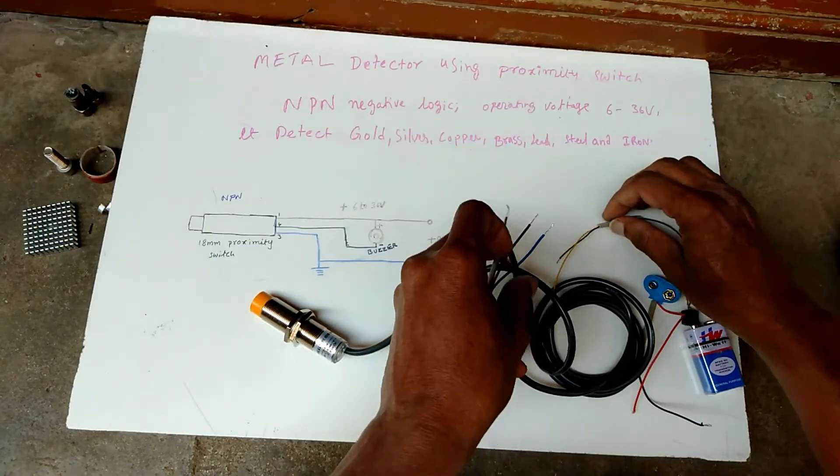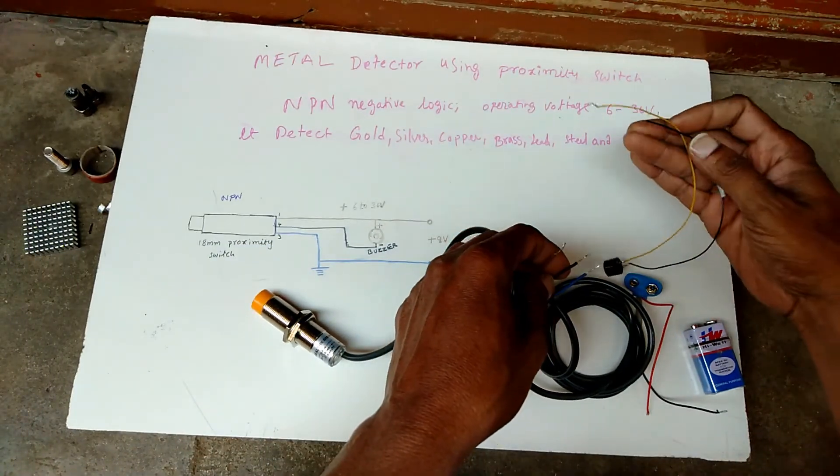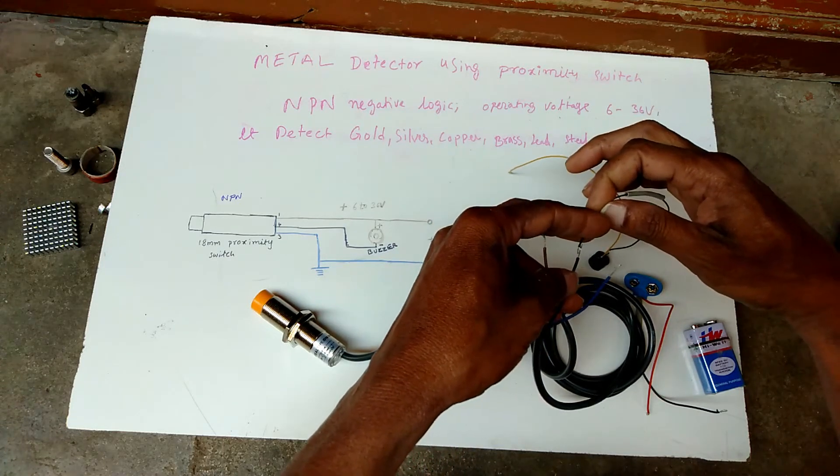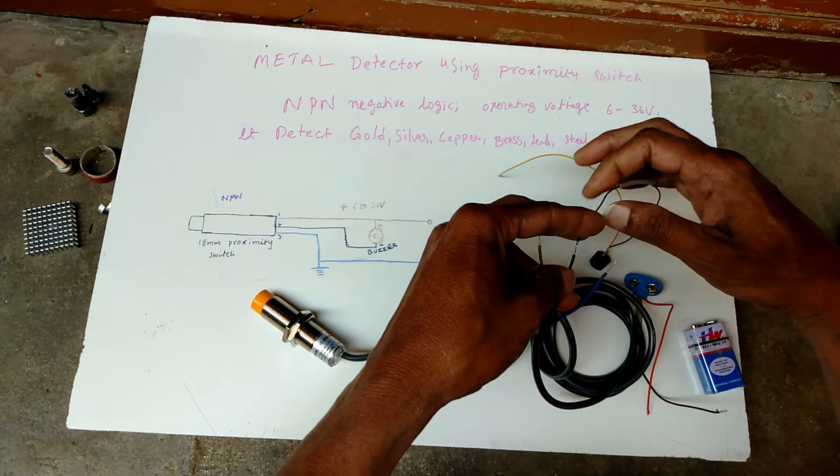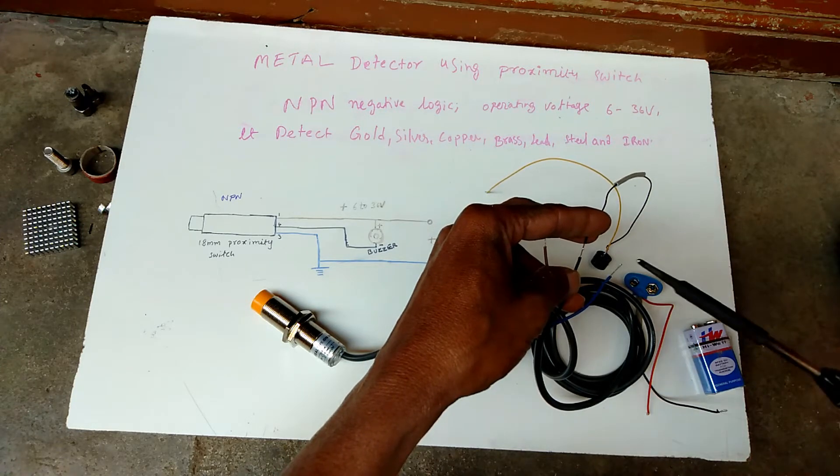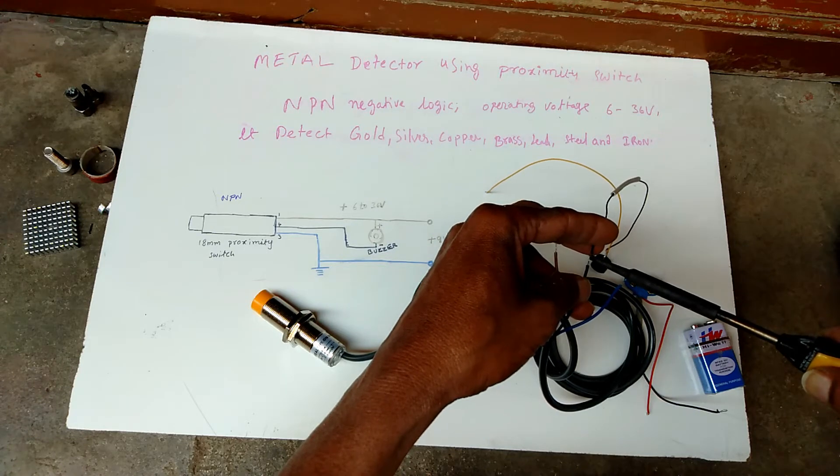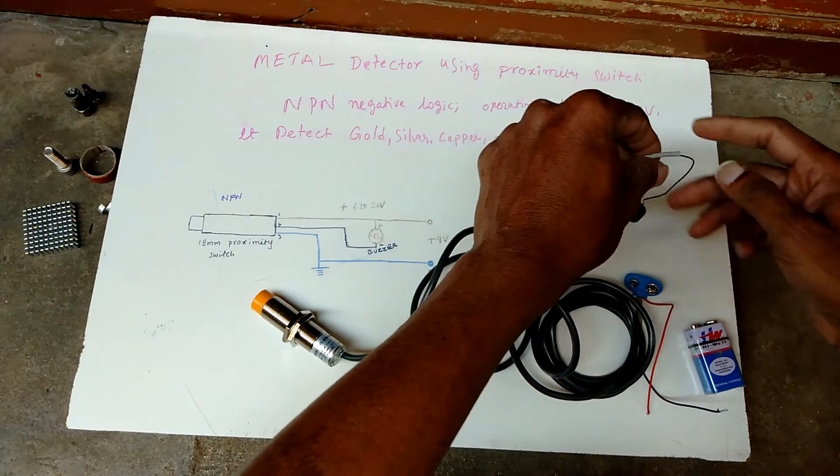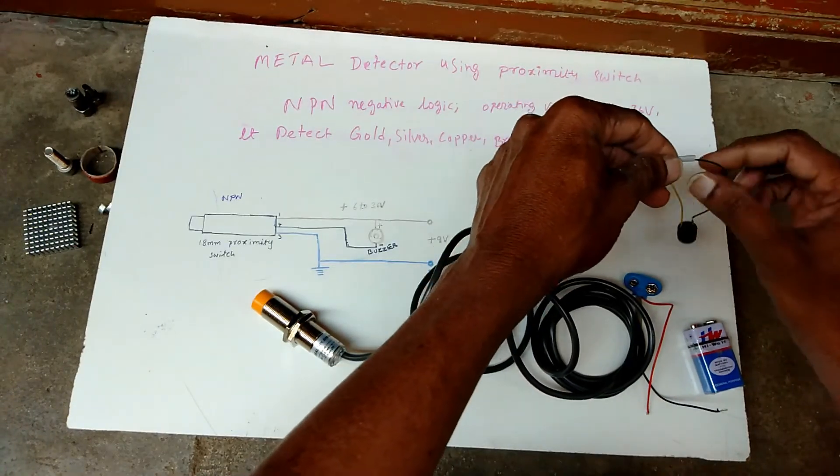First we have to connect this buzzer's negative to black wire output, output we have to solder it. This black wire output connected to this buzzer's negative.